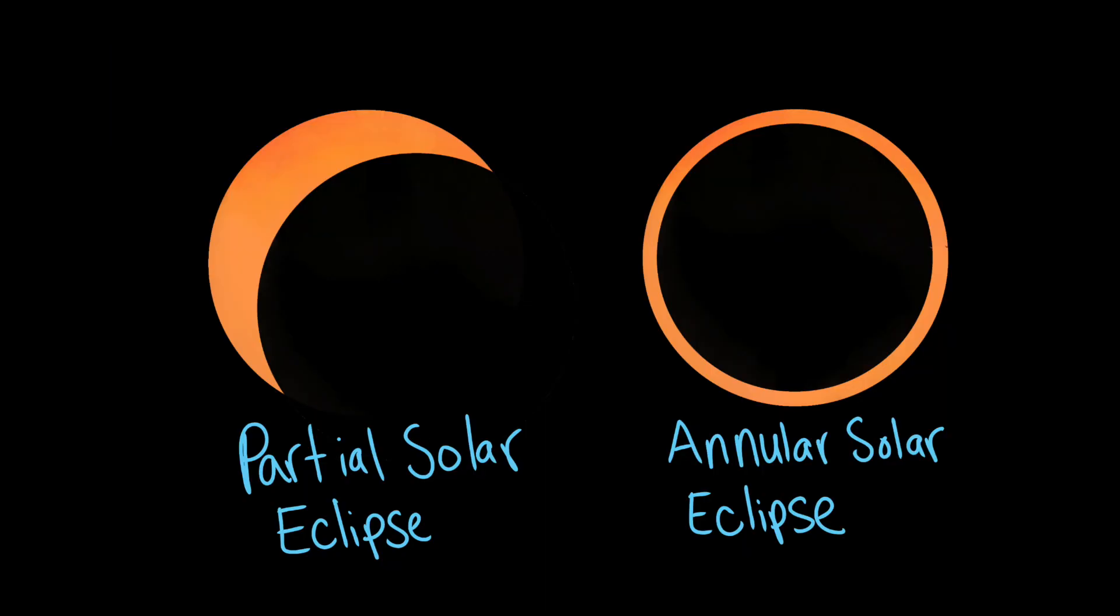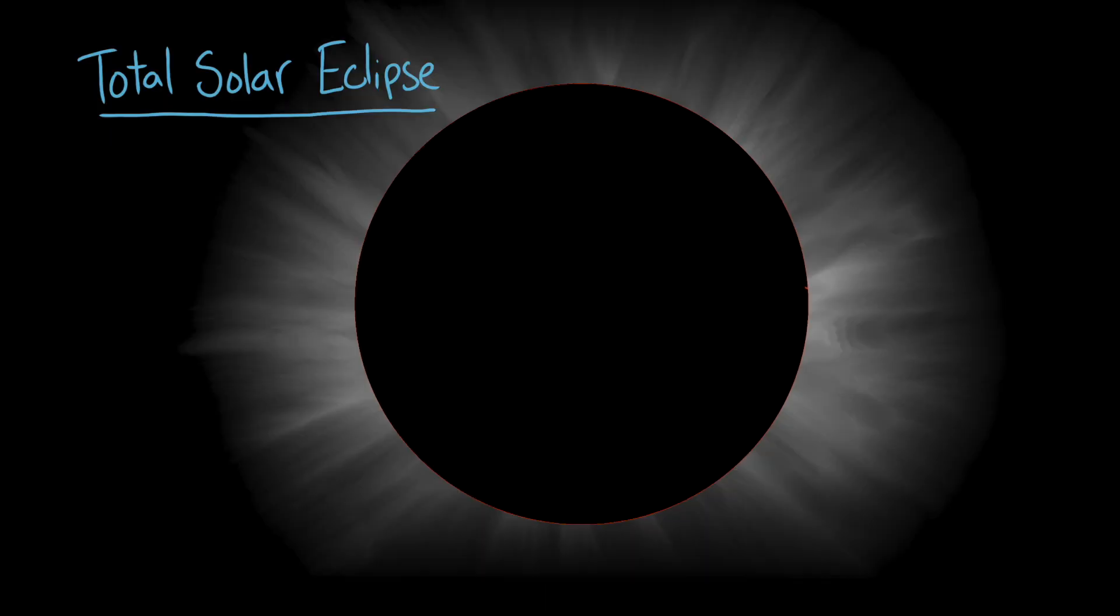There are other types of solar eclipses, but we're going to focus on total solar eclipses in this video. During a total solar eclipse, the outermost layer of the sun's atmosphere, called its corona, is visible.